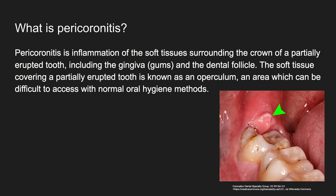Essentially it's the inflammation of the soft tissue surrounding the partially erupted tooth, which is normally impacted by its adjacent tooth, not allowing it to fully erupt into the oral cavity. This creates a pocket where food and debris can get trapped, a hotspot for plaque to stagnate and cause an inflammatory reaction, causing pain and all the other manifestations of pericoronitis.